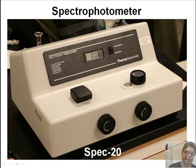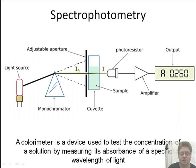You do this using a spectrophotometer. This is called the SPEC20, like the devices we'll be using in class. In spectrophotometry, you use a colorimeter, which is a device used to test the concentration of a solution by measuring its absorbance of a specific wavelength of light. You have a light source, a monochromator, which allows the light source to pass through a cuvette of a solution.